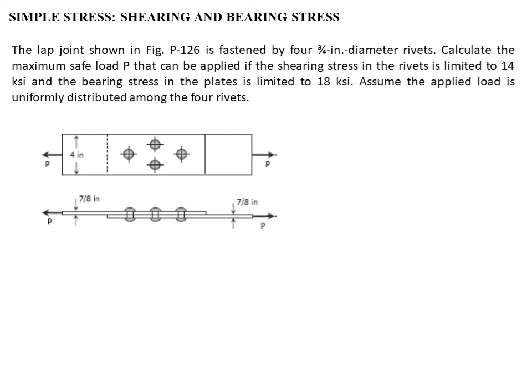Our topic for this video is the combination of shearing and bearing stress under simple stresses. The lap joint shown in figure P126 is fastened by 4 rivets of 3/4-inch diameter. Calculate the maximum safe load P that can be applied if the shearing stress in the rivets is limited to 14 KSI and the bearing stress in the plate is limited to 18 KSI. Assume the applied load is uniformly distributed among the 4 rivets.